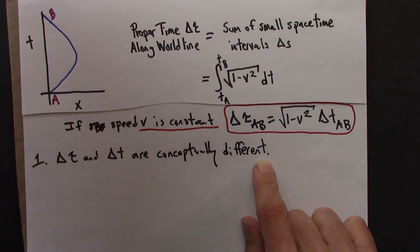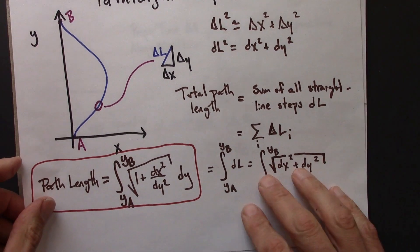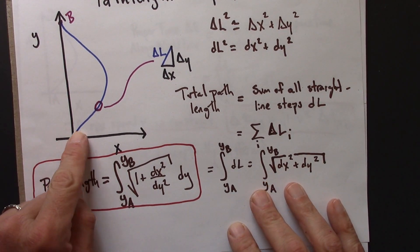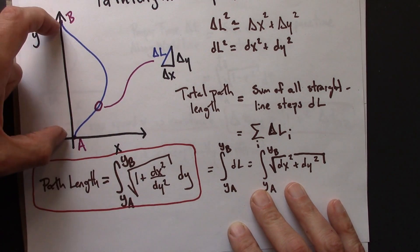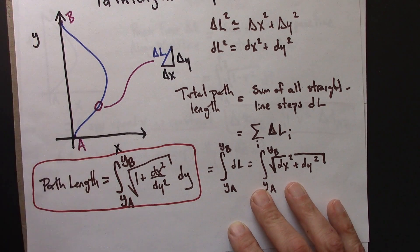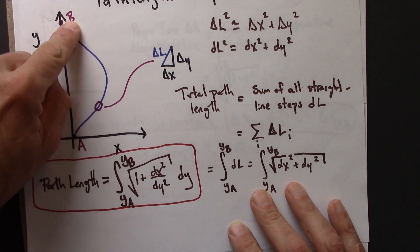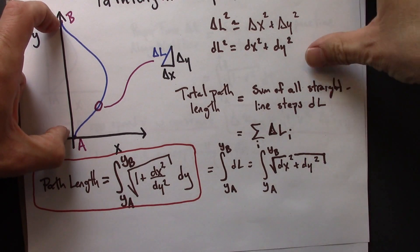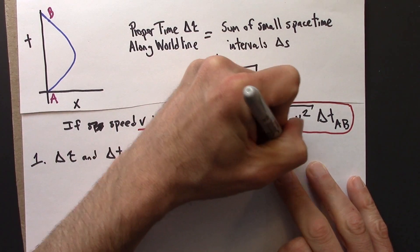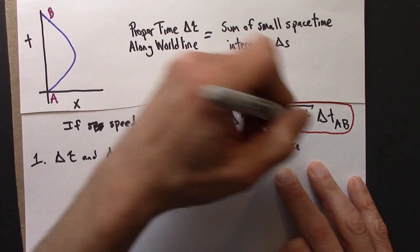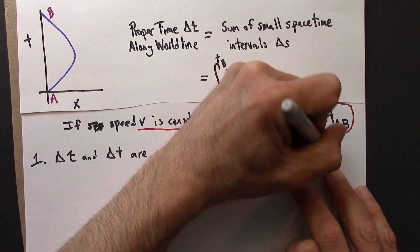To go back to the path length analogy, we have two different types of length here. We have the length of the path, that's delta L, and then maybe we also have delta y. And there'd be no reason to expect in general that a path and its y coordinate, like north, would have the same value. So just as a reminder, this is like delta L and delta y. They're both lengths, but they're very different things.